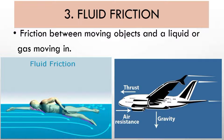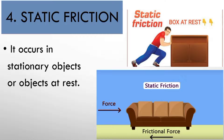Number three, fluid friction — friction between moving objects and a liquid or gas. Number four, static friction. It occurs in stationary objects or objects at rest.